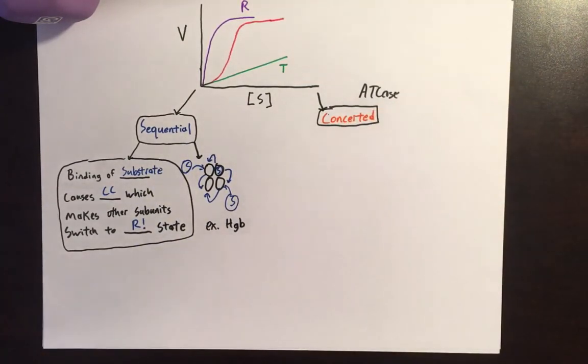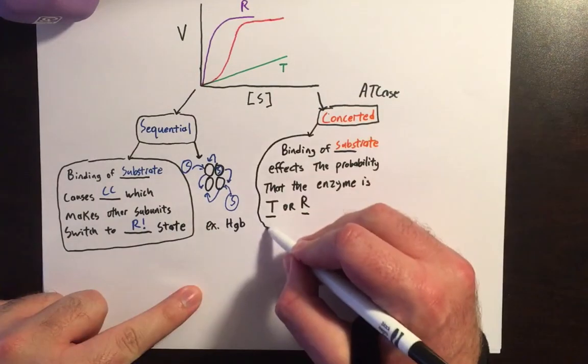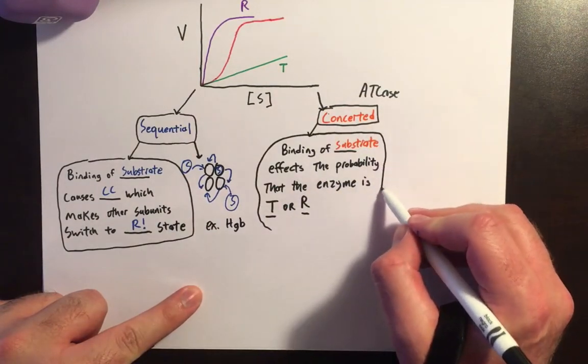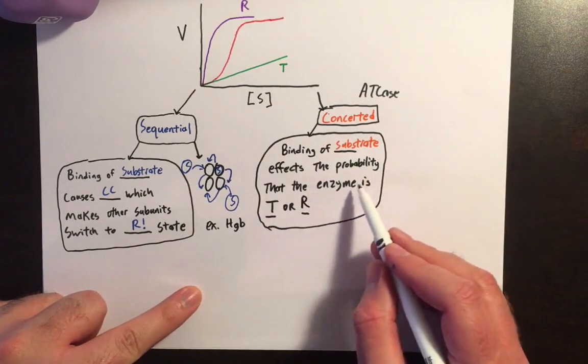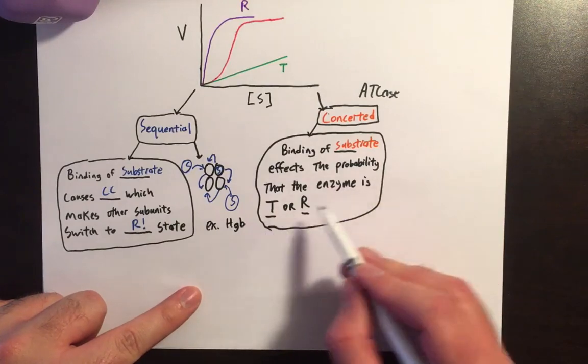So in the concerted model, the binding of the substrate affects the probability of the entire enzyme. The binding of the substrate affects the probability that the enzyme is in the T or R state.